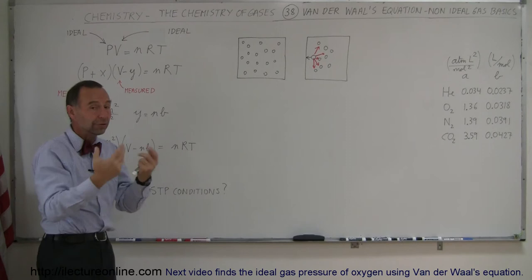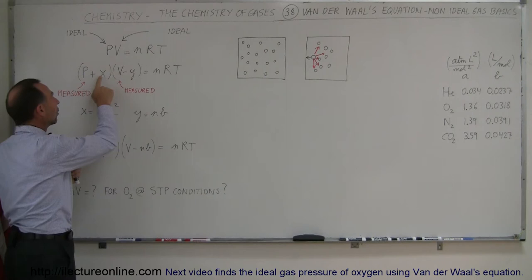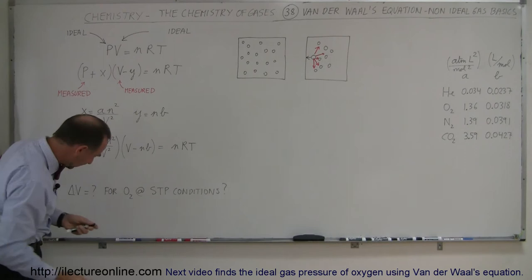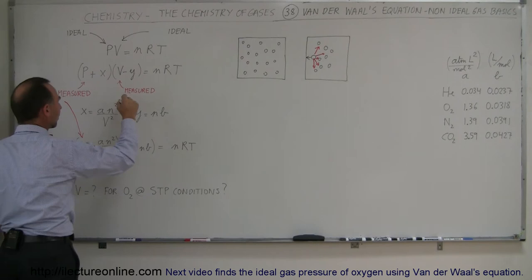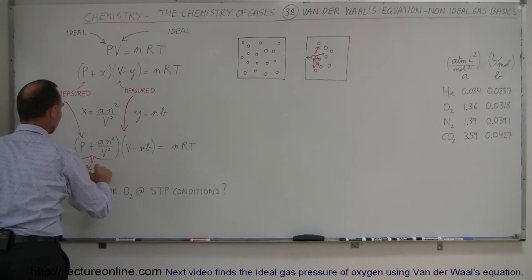Because molecules are pulled back by attractive forces, they don't slam into the walls with as great a velocity as they would if they were ideal gases. So the measured pressure is actually a little bit less than the pressure assumed in an ideal gas situation, which means we have to add a small amount to the measured pressure to get the ideal pressure. The measured pressure is this value, and the ideal pressure is what we need for the equation to work correctly.